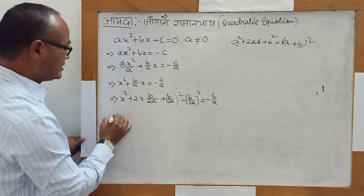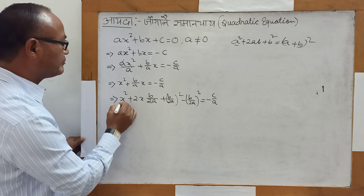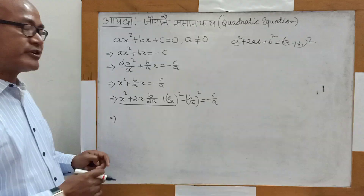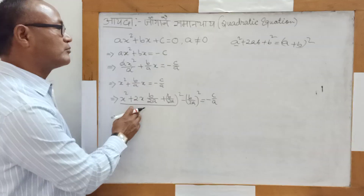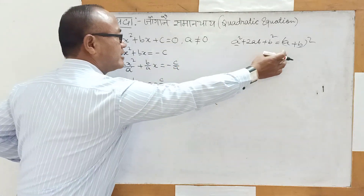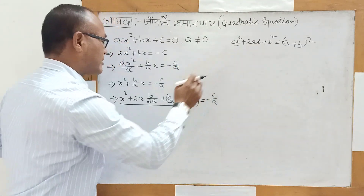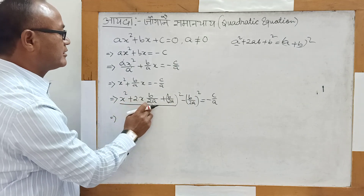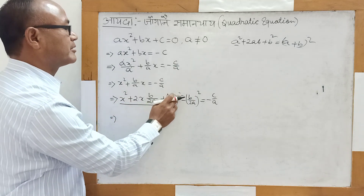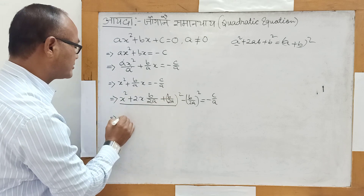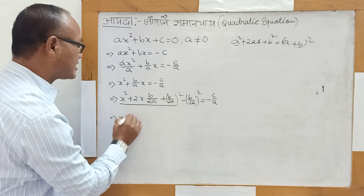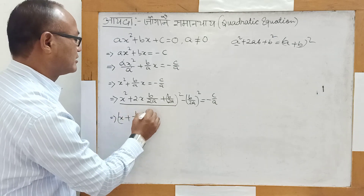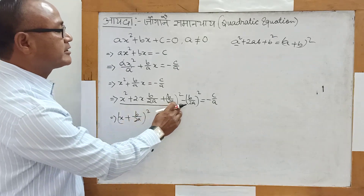This implies that a plus b whole square. I have to write A plus b over 2 whole squared, and the formula is like x plus v by 2A, whole squared.